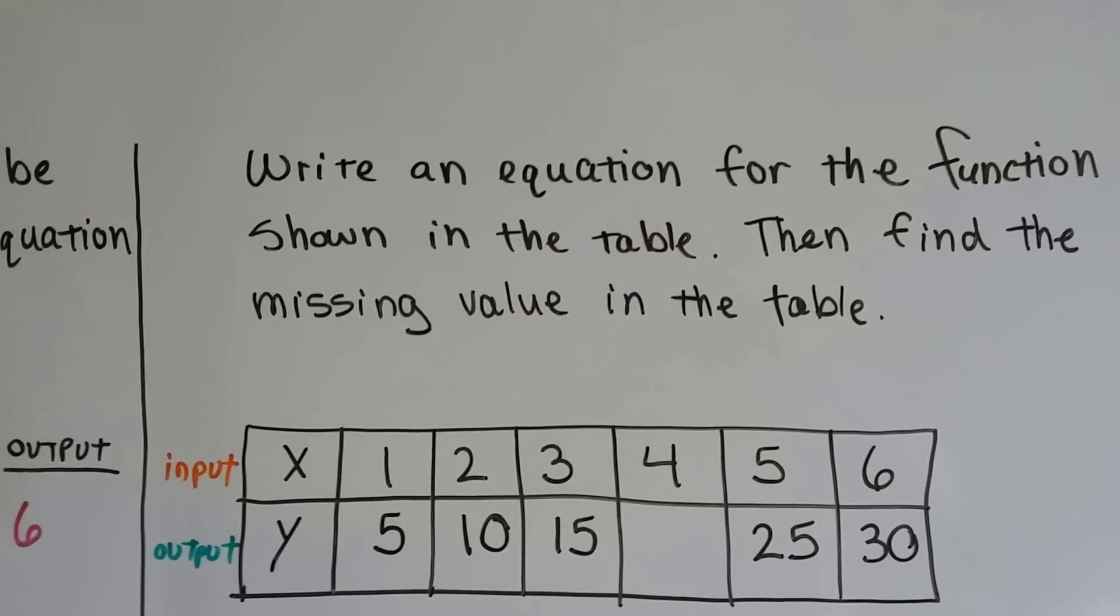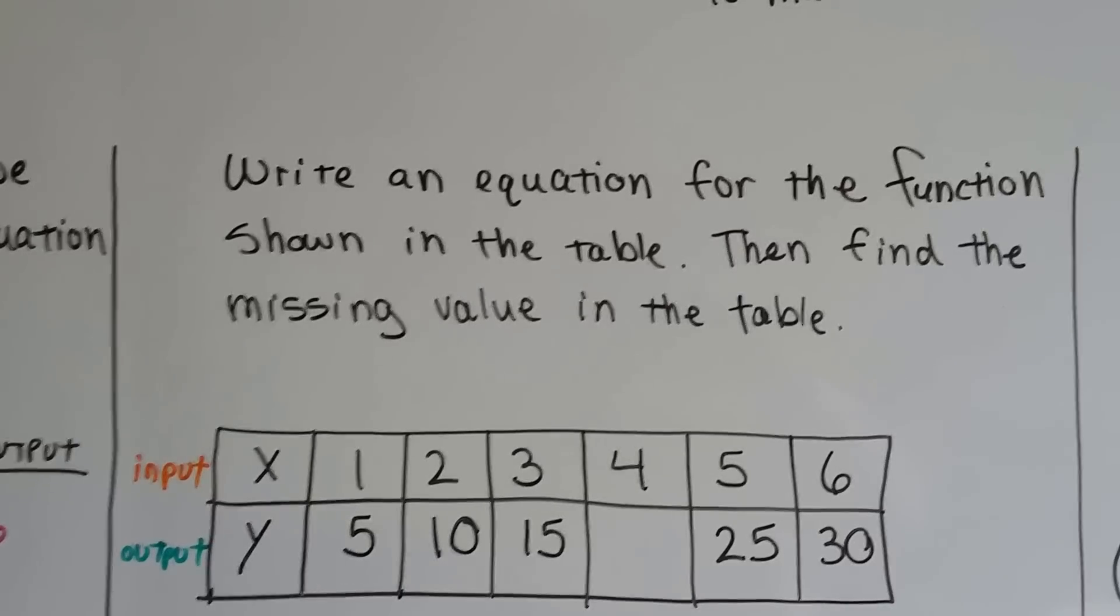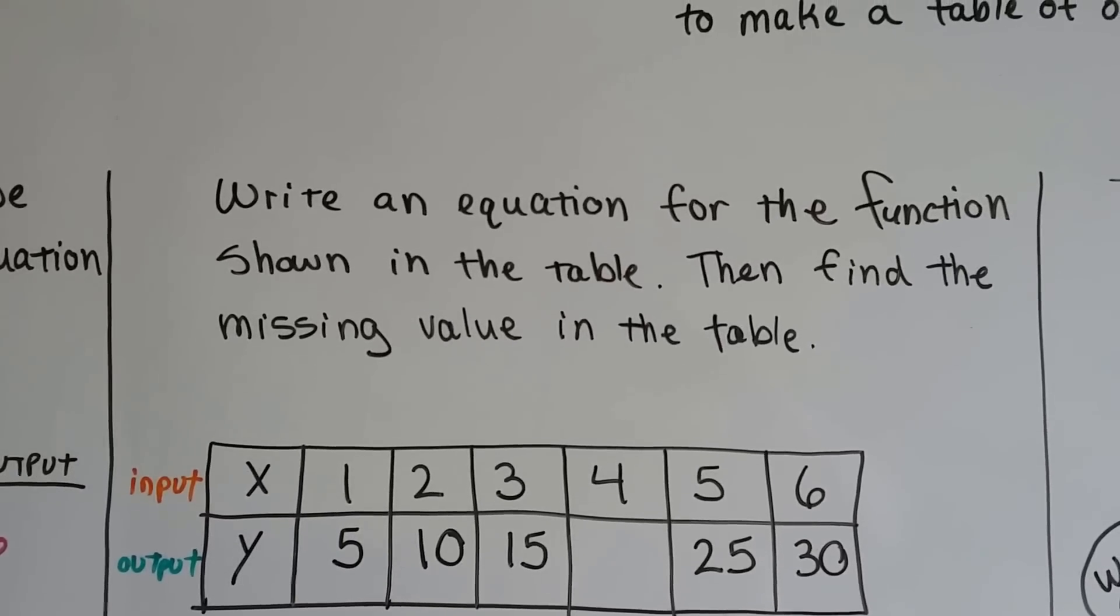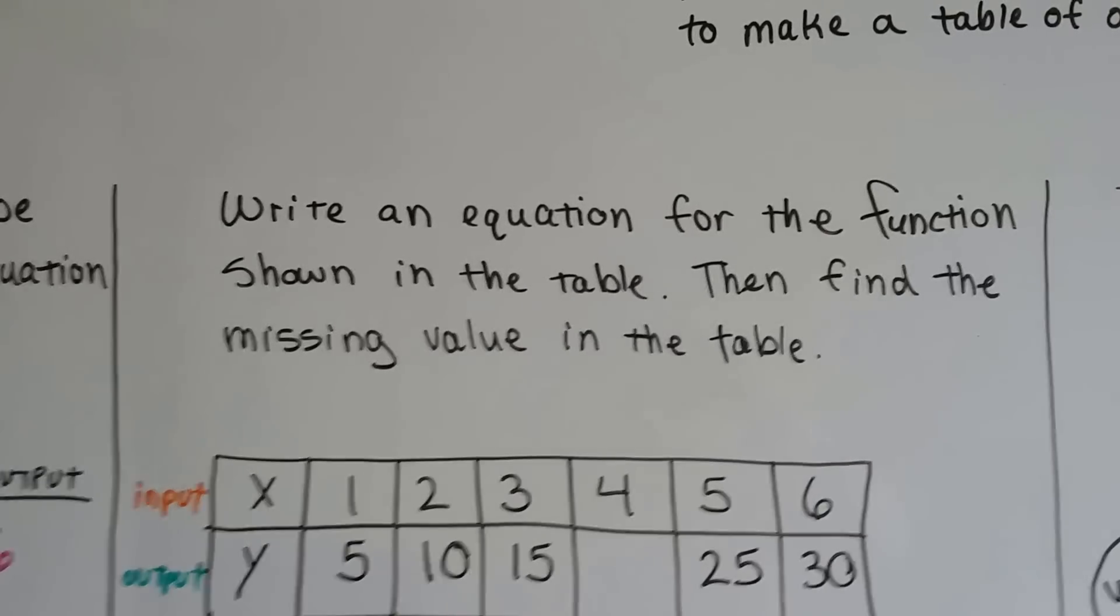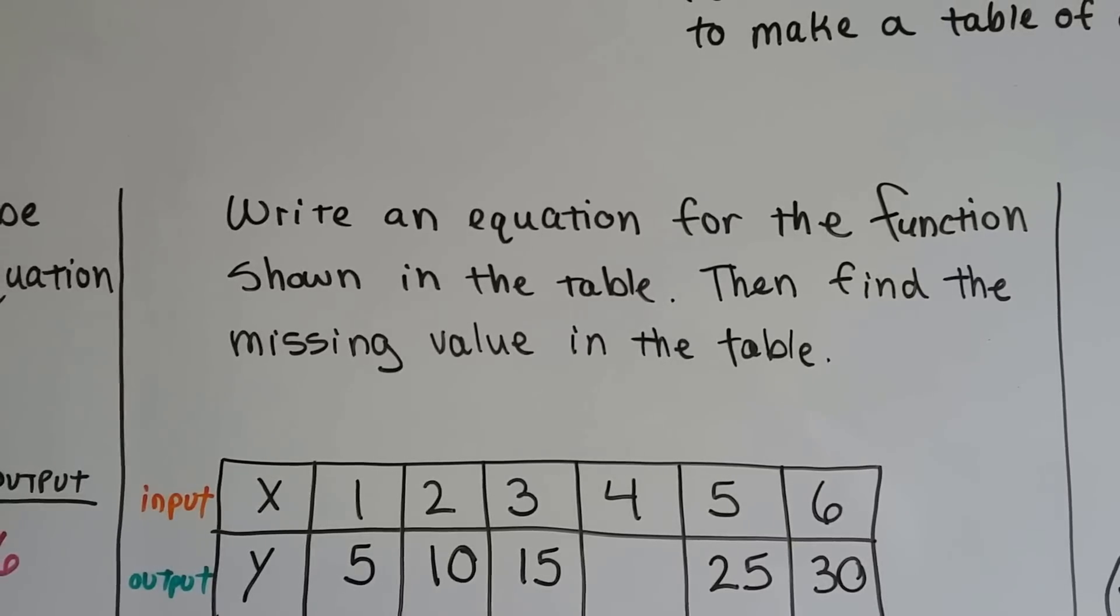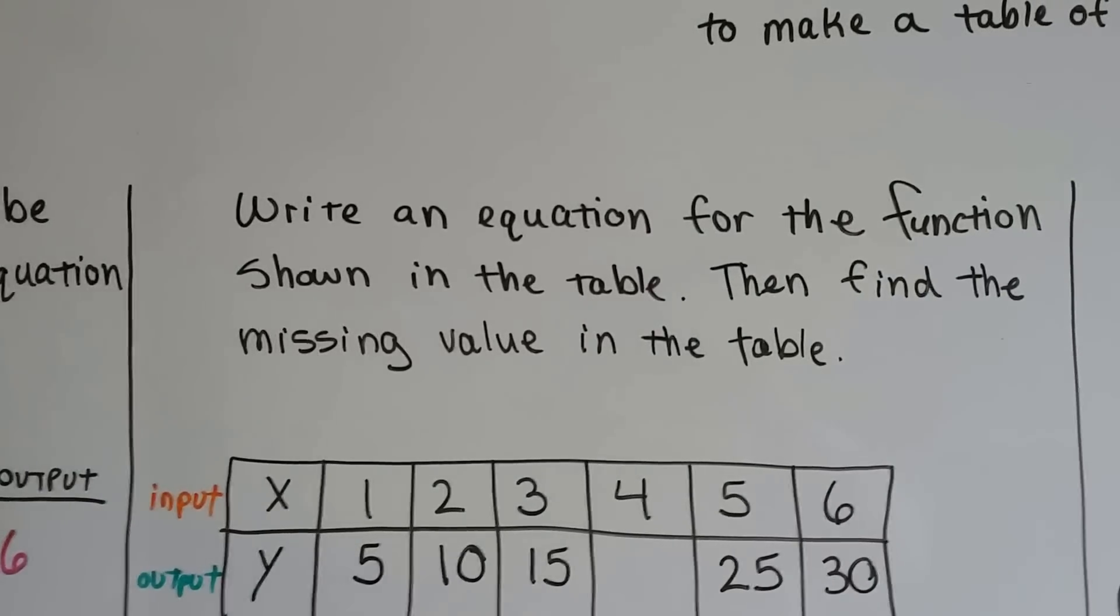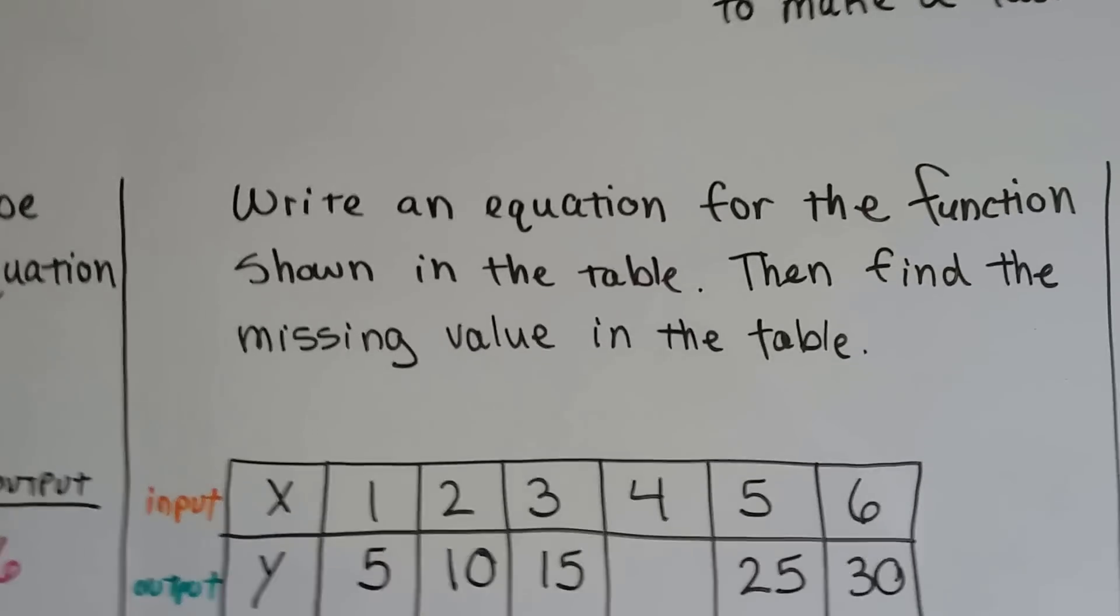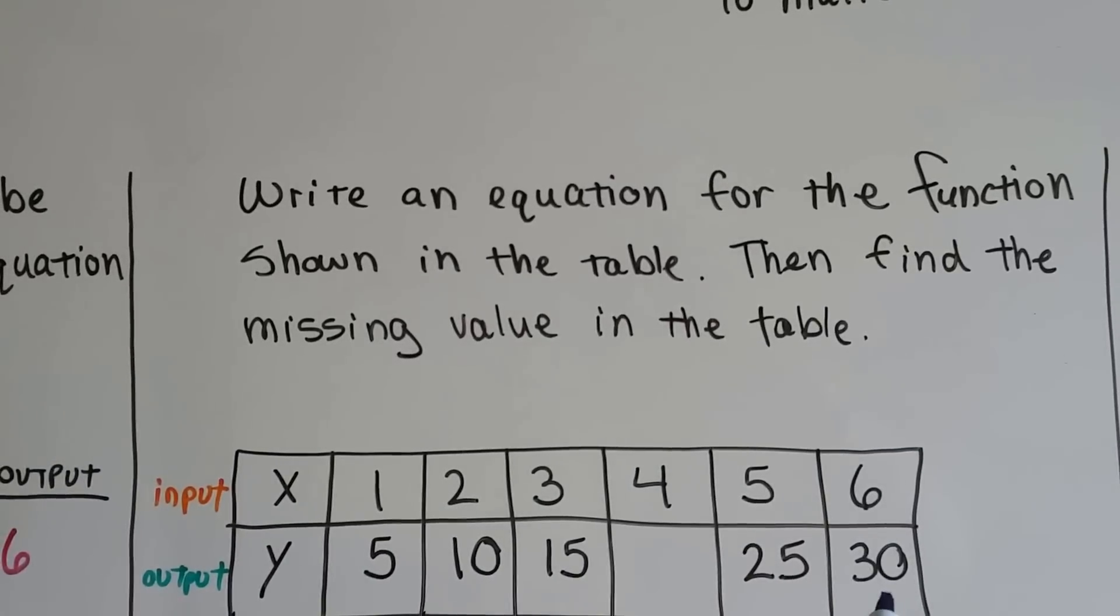It says, write an equation for the function shown in the table, and then find the missing value in the table. So how are we going to write an equation? Well, what we do is, like we did in the last couple videos, we look at the patterns in the sequence. What's the relationship between x and y in the first box, 1 and 5, and then 2 and 10? What's it doing? What's the y doing? What's the sequence for the y doing down here? 5, 10, 15 something, 25, 30.